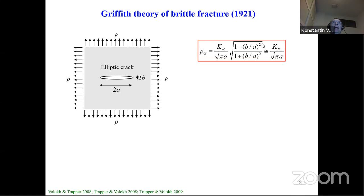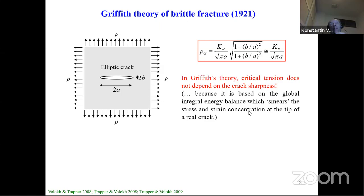Mathematically, certain terms are very small compared to one, so computationally this critical tension doesn't depend on the crack sharpness. In Griffith theory, critical tension doesn't depend on the crack sharpness because the theory is based on a global energy balance, which smears the stress and strain concentration at the tip of the real crack. This result says that whatever the crack tip, it will always have the same critical tension.